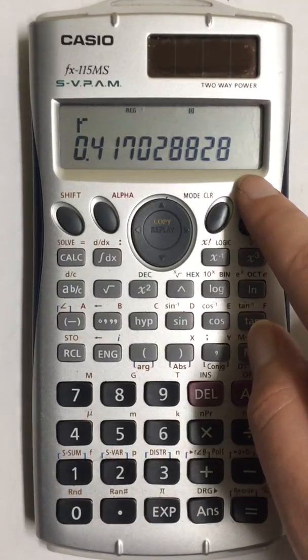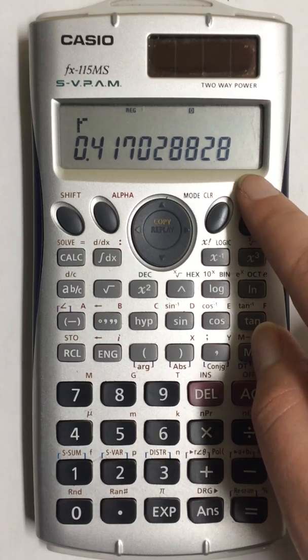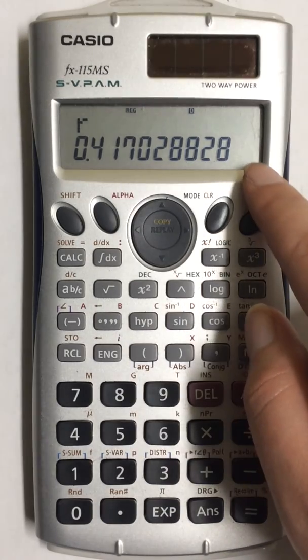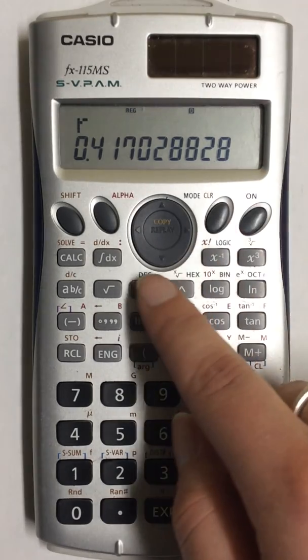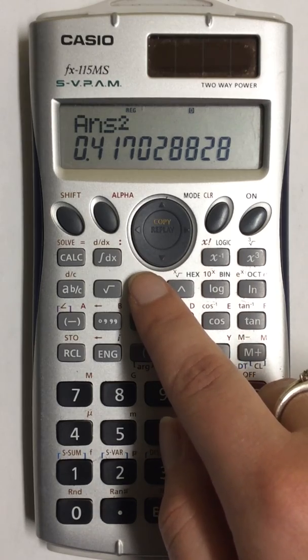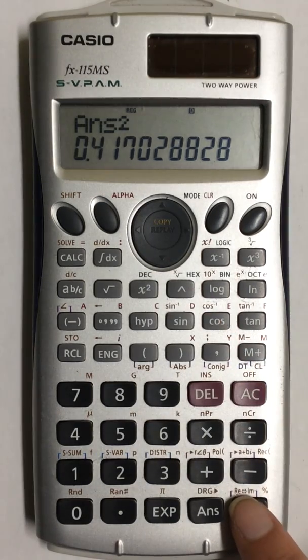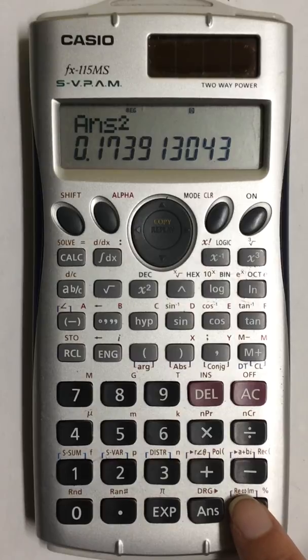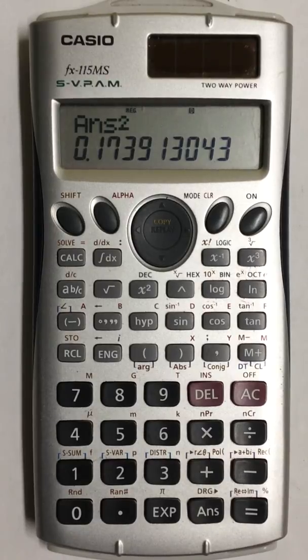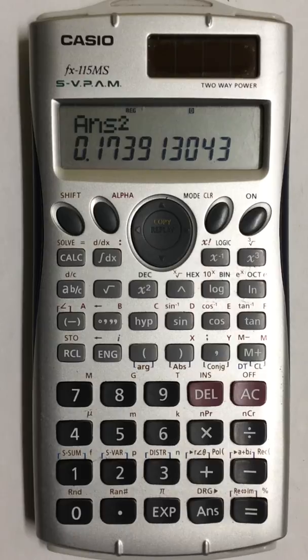Now if you're looking for the coefficient of determination, you can leave this on the screen and press the squared button and then press equals, and that will give you the coefficient of determination. So this is how to find the correlation coefficient for two variable statistics in your Casio FX 115 MS scientific calculator.